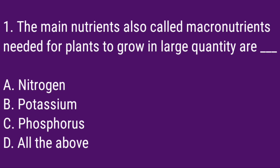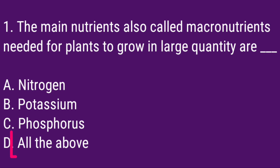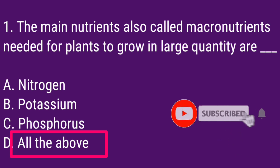Q1. The main nutrients, also called macronutrients, needed for plants to grow in large quantity are? Correct answer: All the above — Nitrogen, Potassium, Phosphorus.